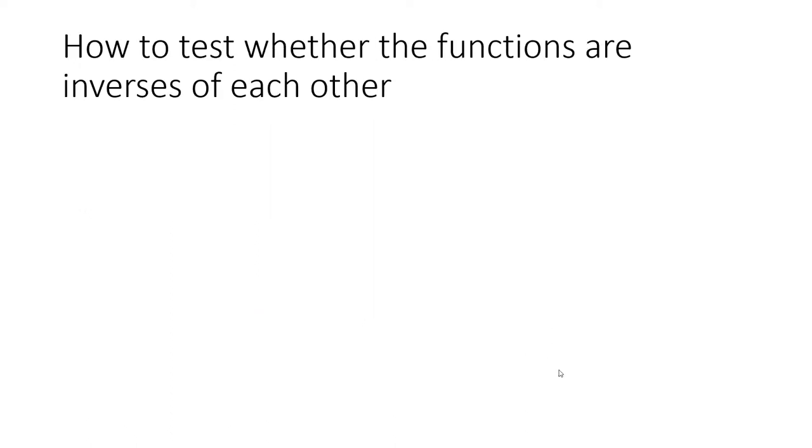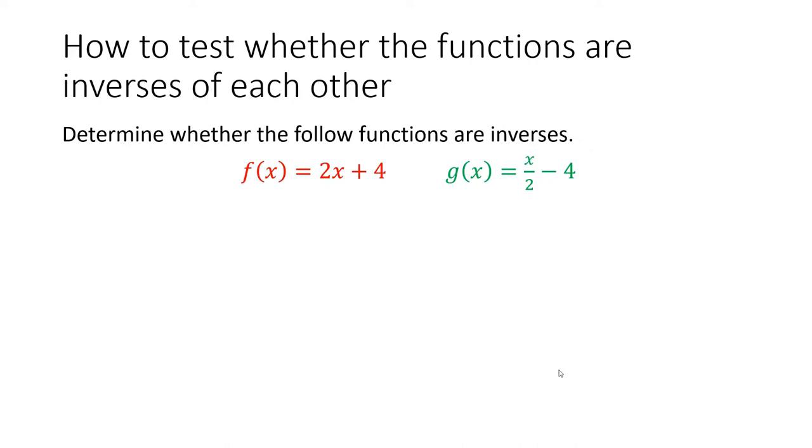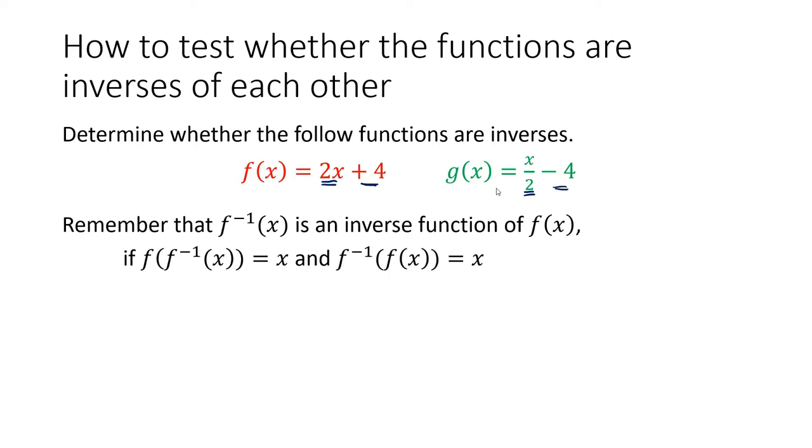How can we test whether the functions are inverses of each other? Here we have f(x) = 2x + 4 and g(x) = x/2 - 4. You might be thinking, here we have 2x and x divided by 2, which are opposites, and we have plus 4 and minus 4. So maybe they are inverses. But we cannot just look at these and say they are. We have to find composition of functions and see if they equal x, because that is the definition of inverse functions. The composition of functions returns x each time.